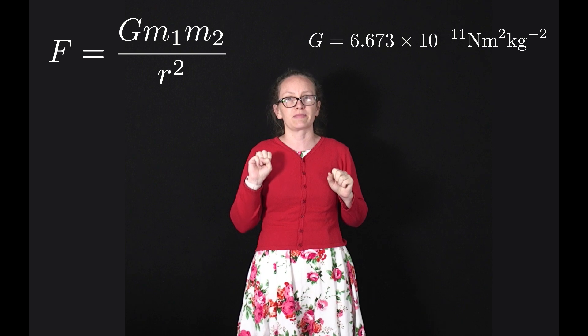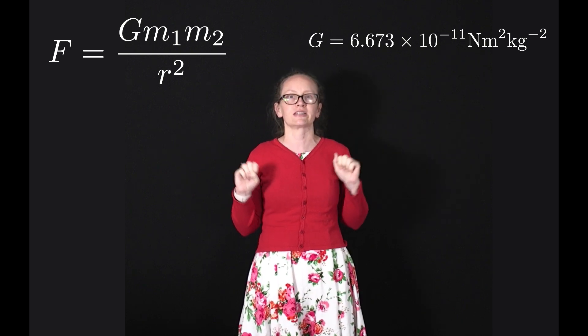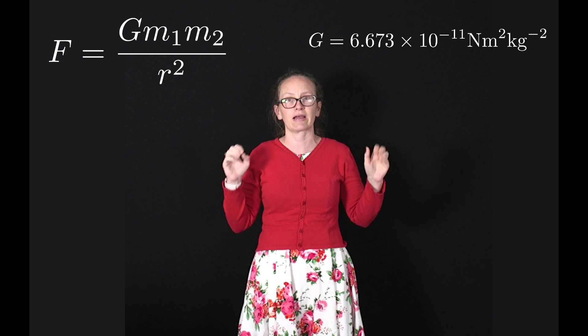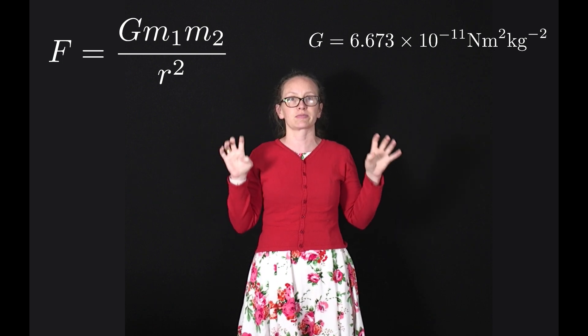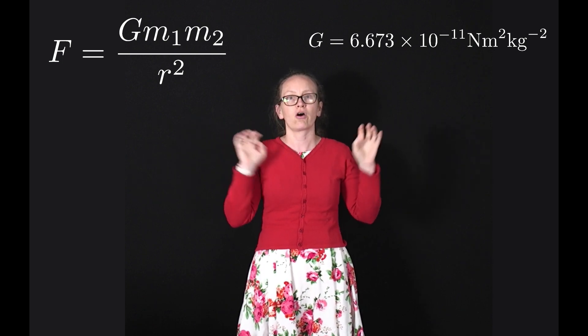m₁ is the mass of one body in kilograms, m₂ is the mass of the second body in kilograms, and r is the distance between the centers of mass of these two bodies.